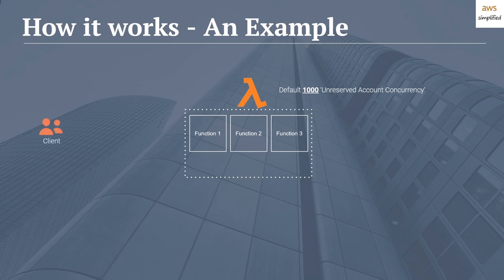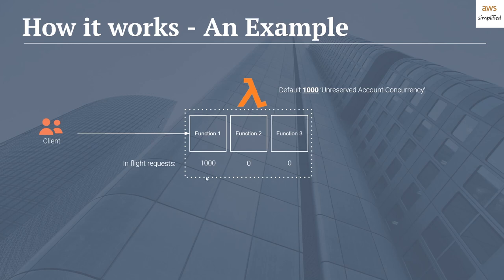Now say we have a client — some REST API acting on behalf of a user through a front end. Assume that at a particular instant in time, I start calling function one with a very high number of requests — a sudden burst of traffic, hundreds if not 1000 requests. Let's assume that at that instant, I have 1000 concurrent executions running against function one. If a new invocation comes in at this moment, it will get throttled because that exceeds our 1000 unreserved account concurrency limit. It can never go to 1001 — any new invocation exceeding that amount will get throttled.